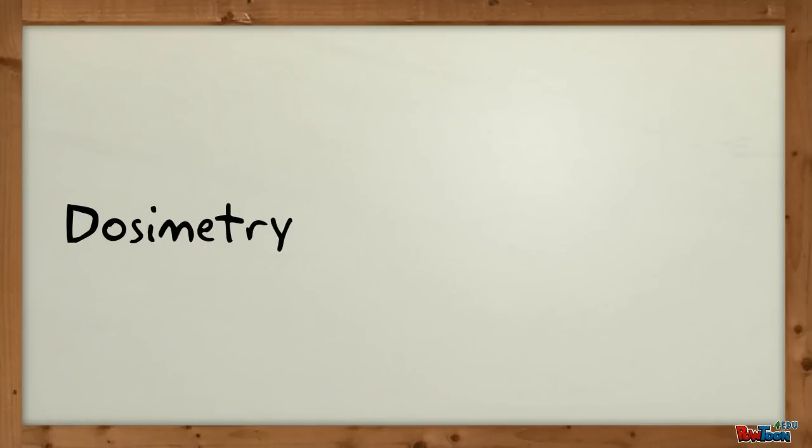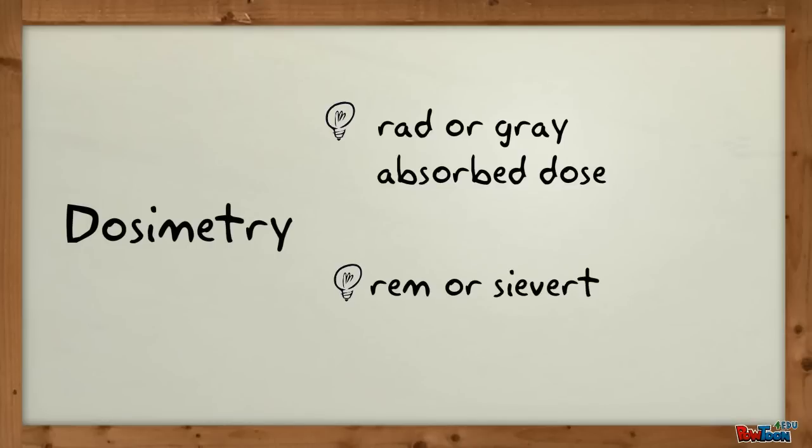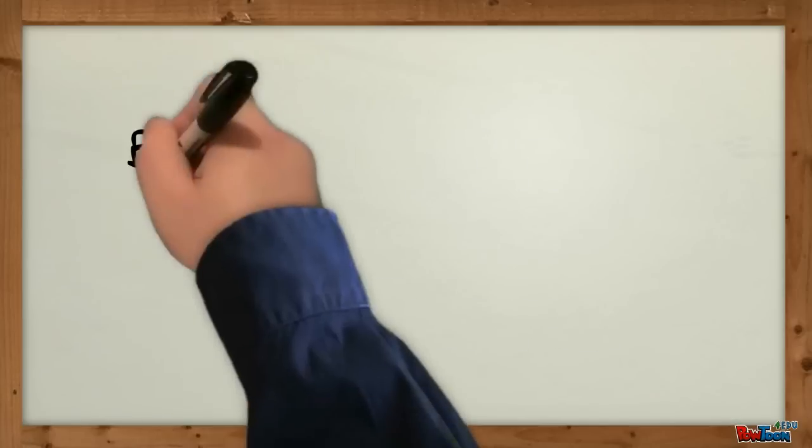Let's look at some basic dosimetry measurements. A RAD or a GRAY refers to an absorbed dose. RAD in fact stands for radiation absorbed dose. A REM or Sievert refers to the unit of dose equivalent. REM stands for radiation equivalent man and is an expression of the biologic response to radiation.